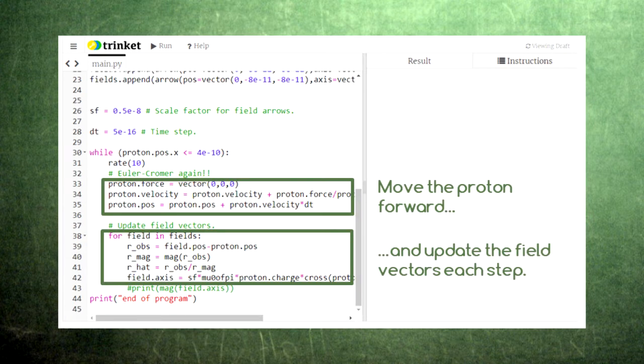Finally, we set up an animation loop where we move the proton along a path at constant velocity and then adjust the size and direction of each magnetic field vector based on the proton's position.